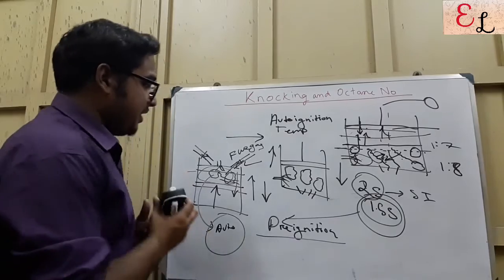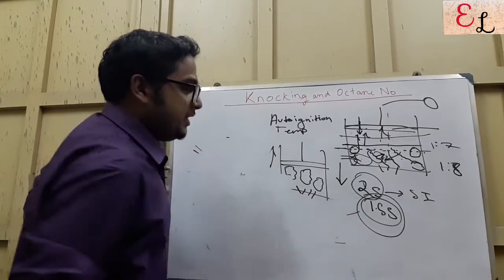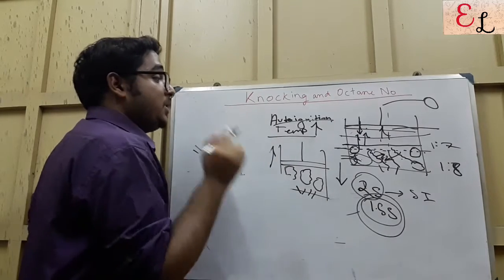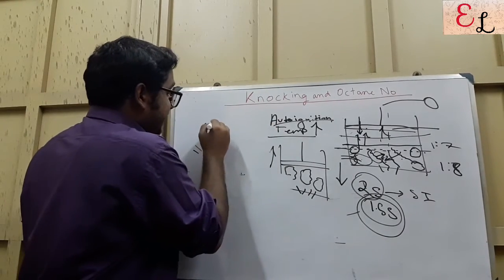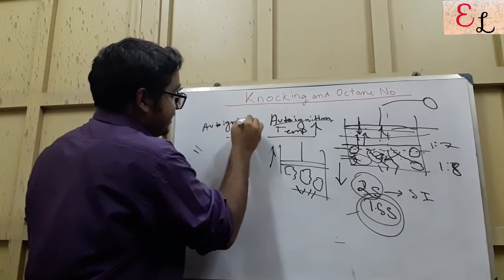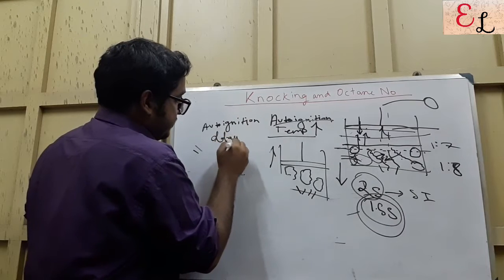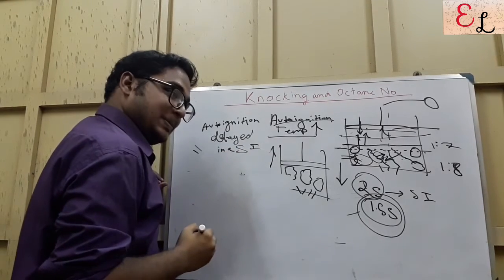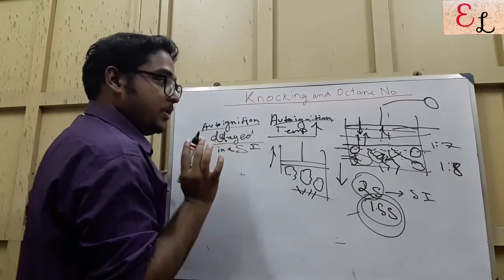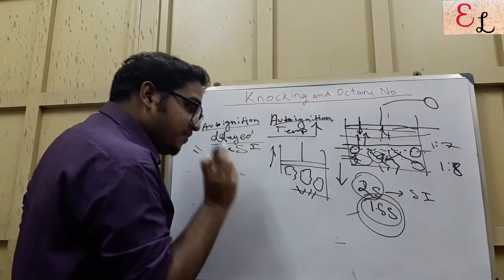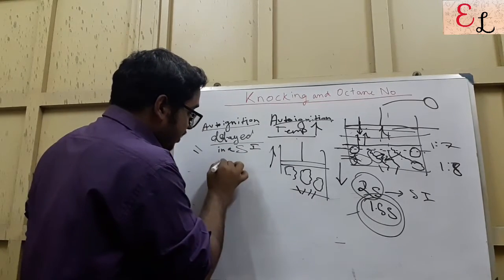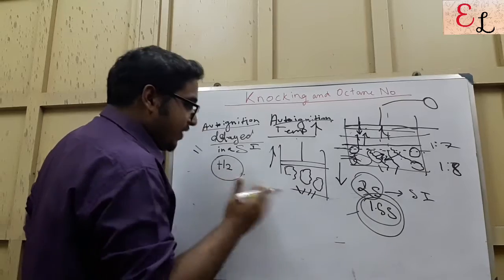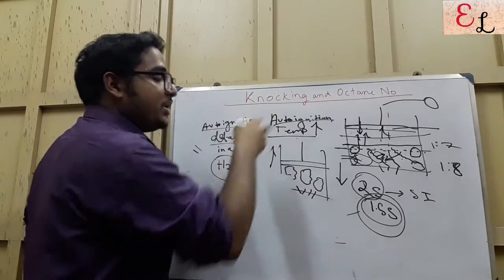So the key term coming into picture very prominently is auto-ignition and auto-ignition temperature. Auto-ignition temperature should be kept as high as possible so that auto-ignition is delayed. Auto-ignition should be delayed in a spark-ignition engine. To delay this auto-ignition and increase the auto-ignition temperature, we will have to prevent easy combustion. To do that, we will have to remove H₂, because H₂ is a supporter of combustion. The more we remove H₂, the lesser is the tendency of combustion or auto-ignition.